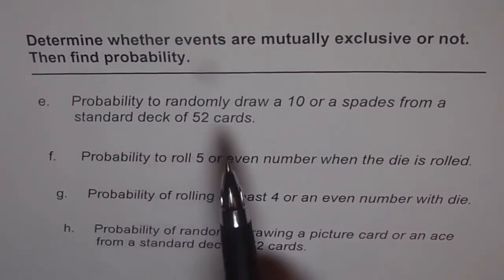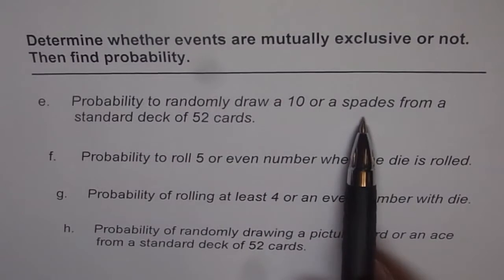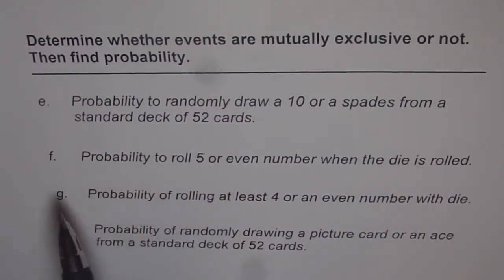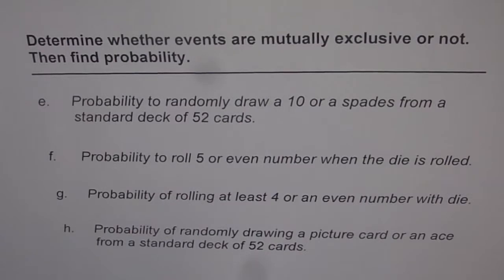Part E is the probability to randomly draw a 10 or a spade from a standard deck of 52 cards. Part F is in continuation to the previous question, where we discussed about dependent and independent events. The combination of dependent/independent events and mutually exclusive or not gives us a good picture about compound events, preparing you to solve questions on probability of compound events.